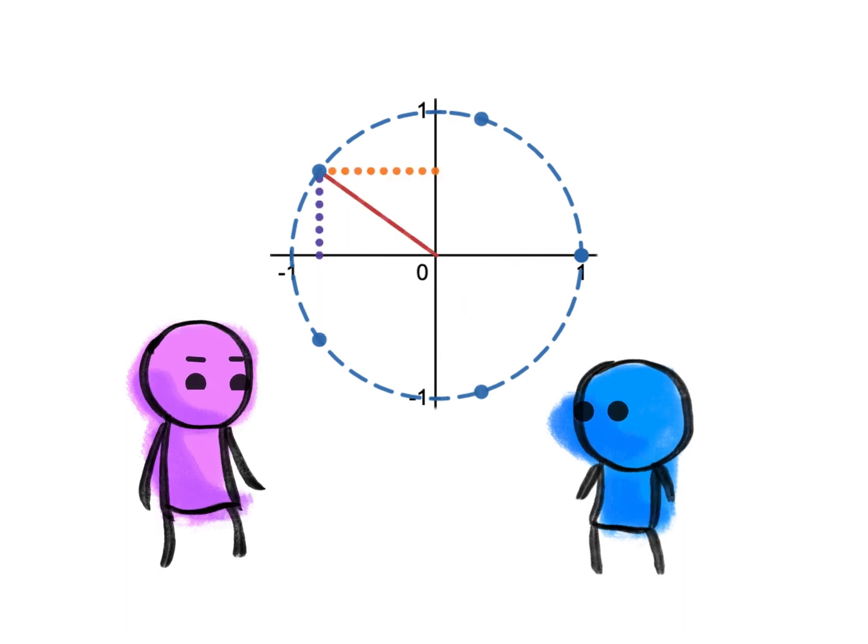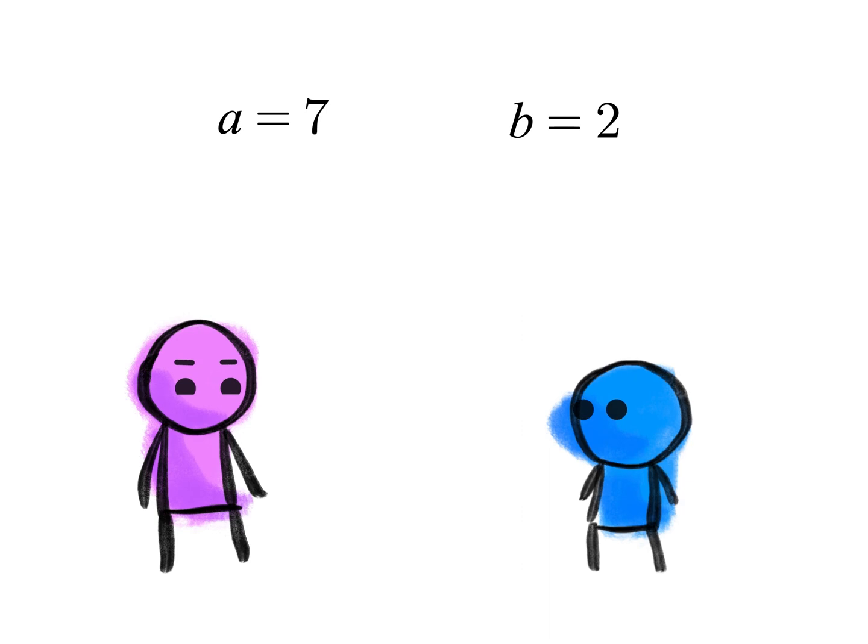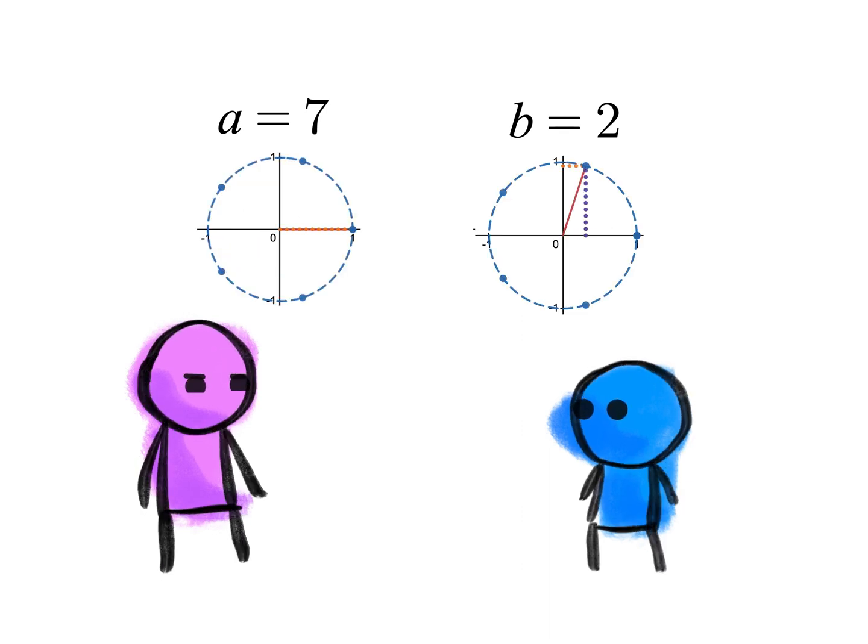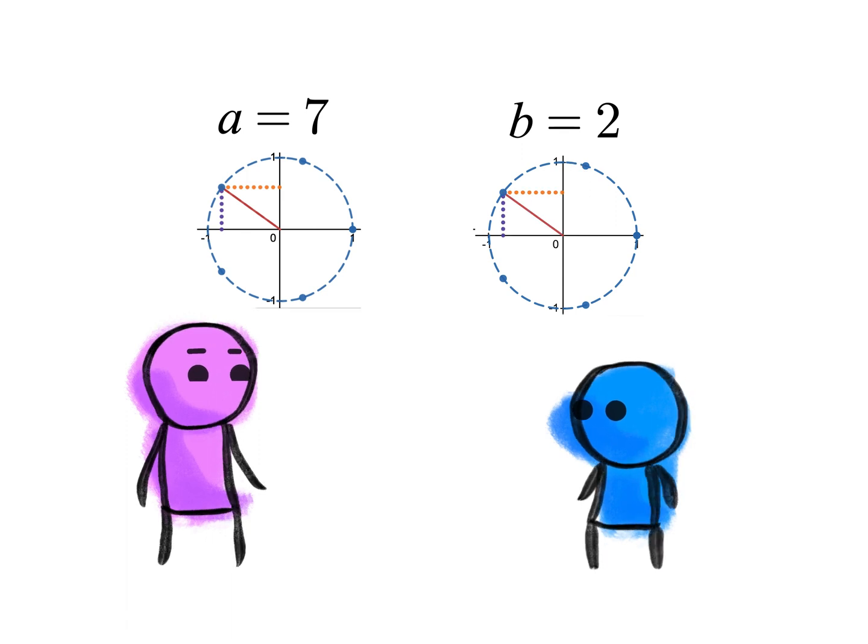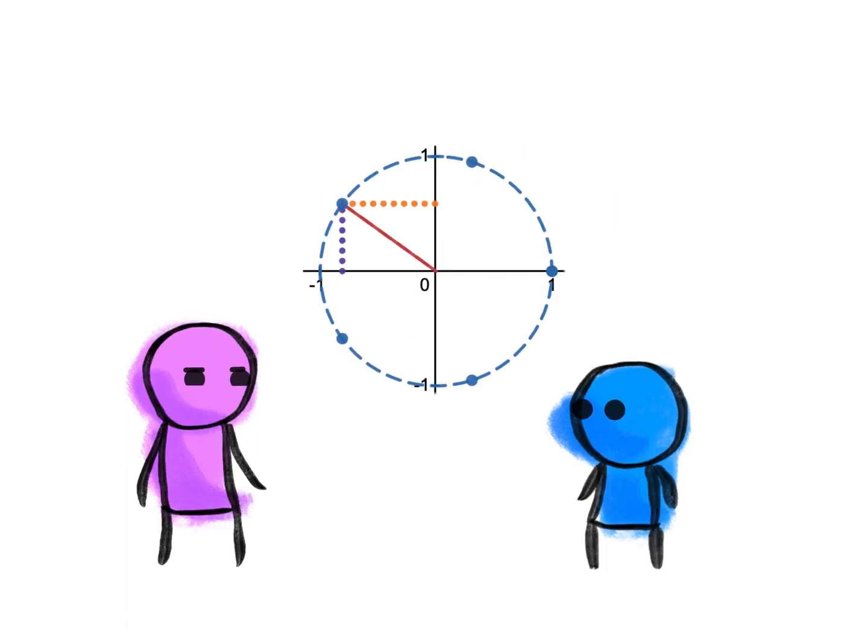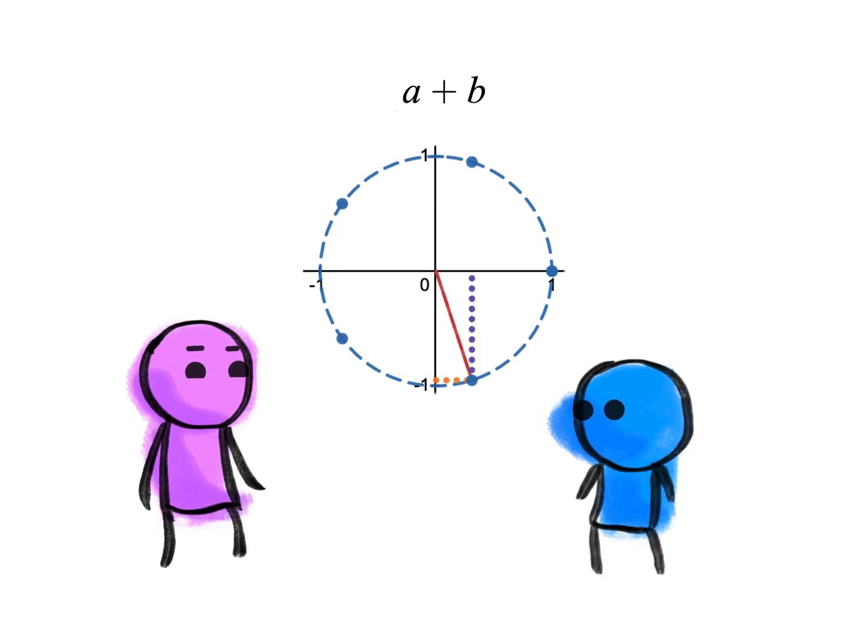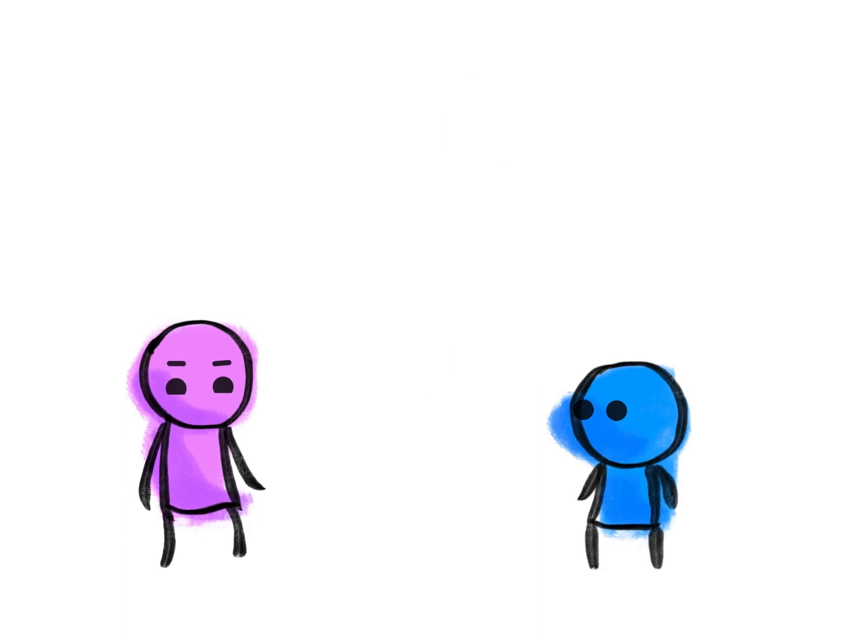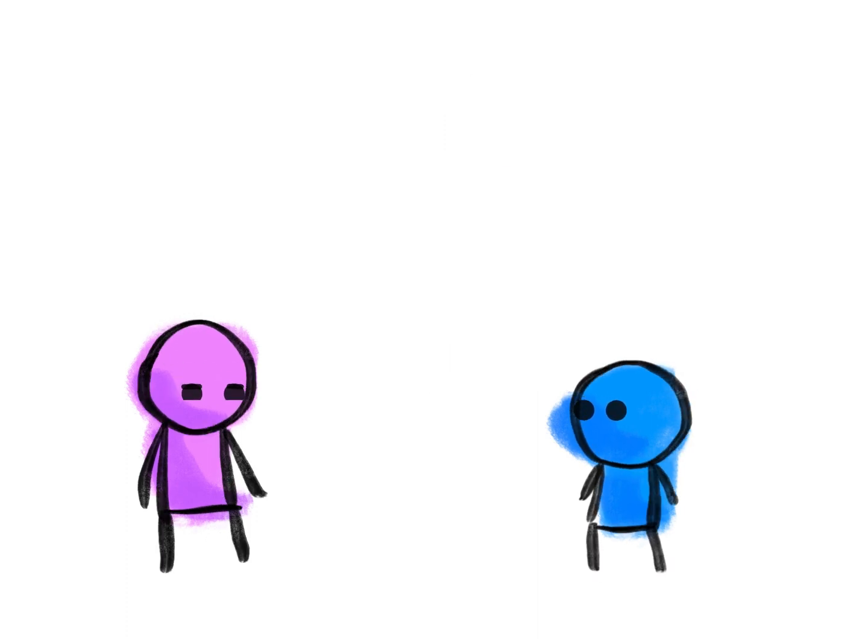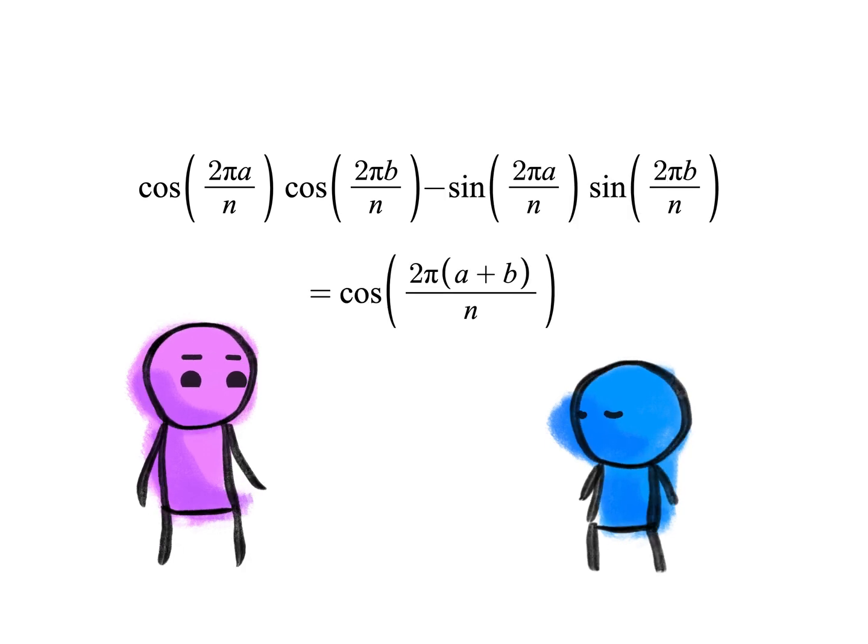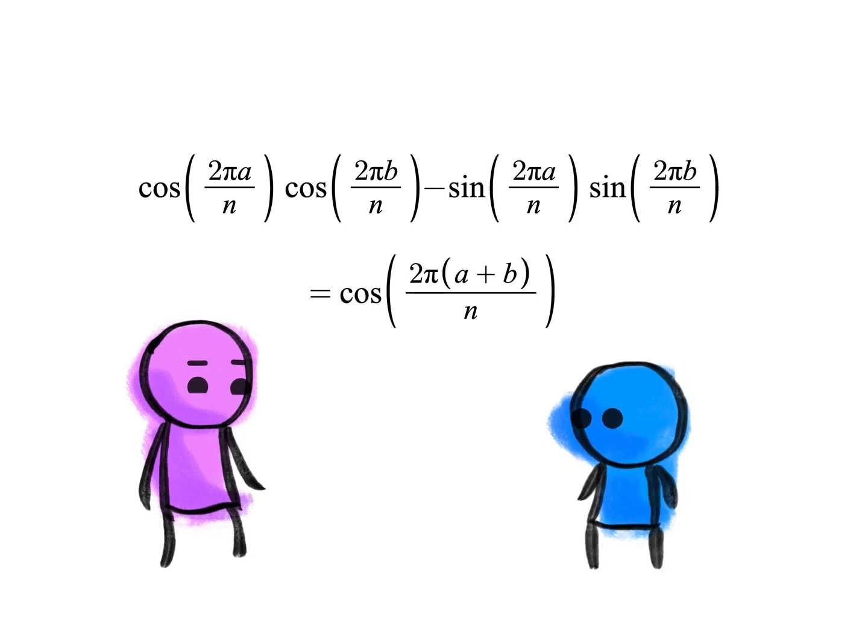And you can take the two inputs, a and b, rotate by 2πa/n and 2πb/n, and you can compose them to get the rotation 2π(a+b)/n. And this is now the sum, but it's also the sum mod n because it wraps around the circle if you get too big. And you can compute this by just taking multiplication of pairs of the trig terms and adding them using trig identities.